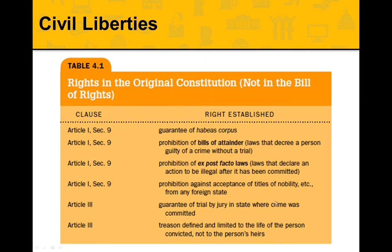There are some additional civil liberty protections: no nobility in our country, a guaranteed trial by jury in the state where the crime was committed, and Article 3 defines treason as limited to the life of the person convicted — your heirs can't be found guilty of treason just because of you. Those are some civil liberties found in the original Constitution.